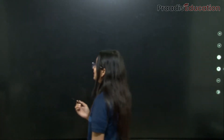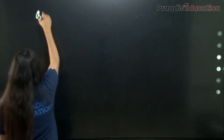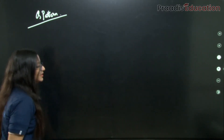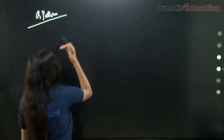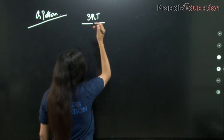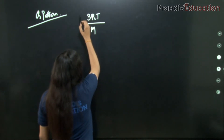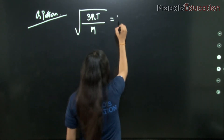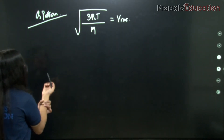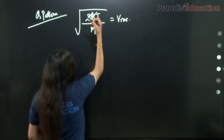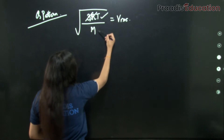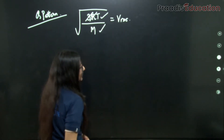Let us understand the question pattern. The v_rms formula is √(3RT/M). In this formula, 3 is constant and R is the gas constant, so what varies is temperature (T) and molar mass (M). The examiner will typically give you temperature and molar mass values for two different gases.